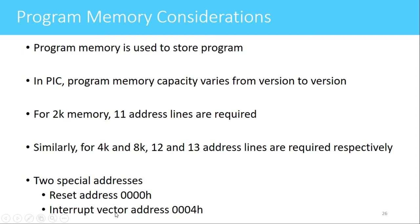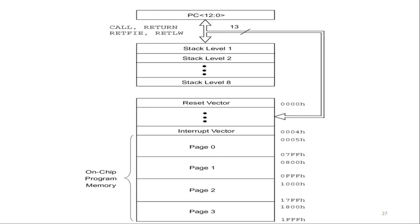The second special address is the interrupt vector address. There are 14 different interrupt sources in PIC16F877. If any interrupt source occurs, the main program is stopped and the program counter jumps to address 04h, which is the interrupt vector address. At this address we can write our interrupt service routine. This is the overview of the flash program memory present in PIC16F877.